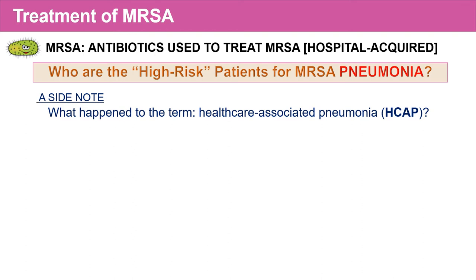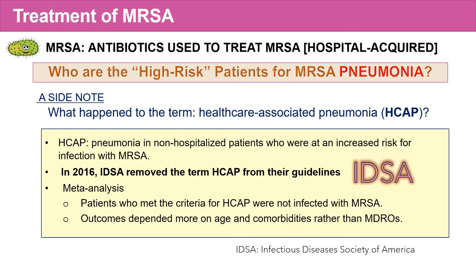There's a subgroup of patients at high risk of developing MRSA pneumonia, called healthcare-associated pneumonia, or HCAP. HCAP is defined as pneumonia in non-hospitalized patients at increased risk of infection with MRSA. However, in 2016, IDSA — the Infectious Diseases Society of America — removed the term HCAP from their guidelines. A meta-analysis found these patients were not infected with MRSA, and their outcomes depended more on age and comorbidities rather than multidrug-resistant organisms.